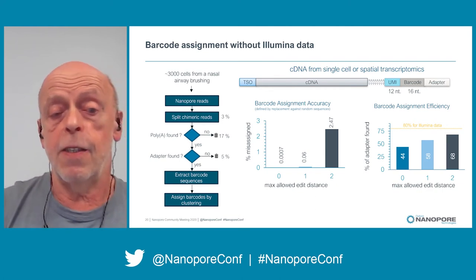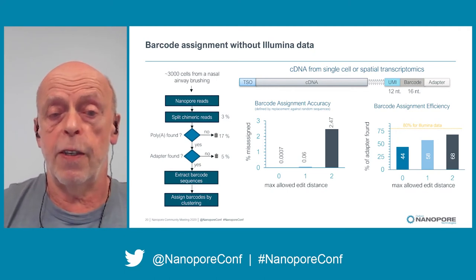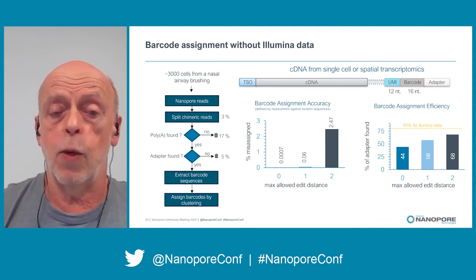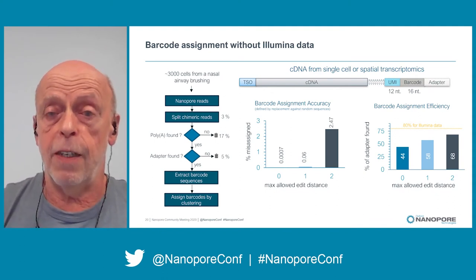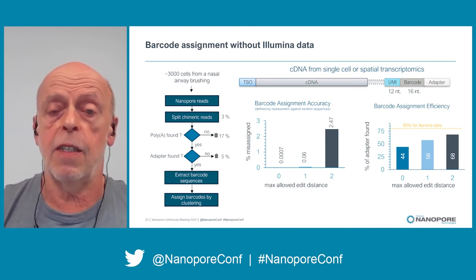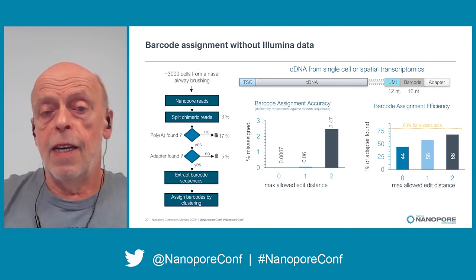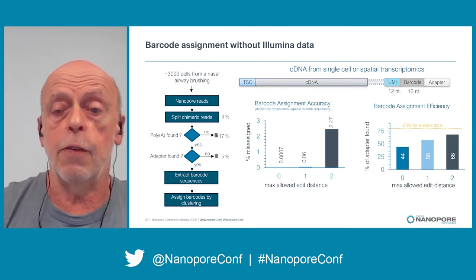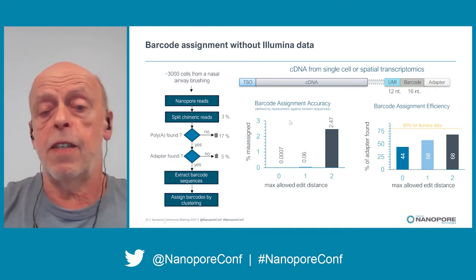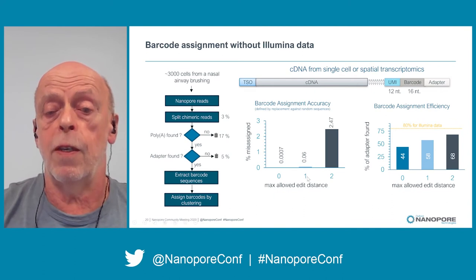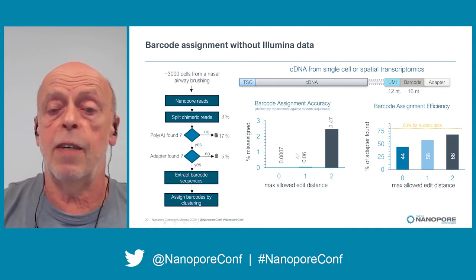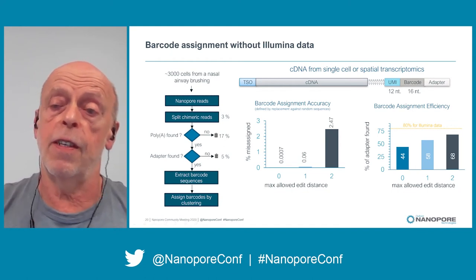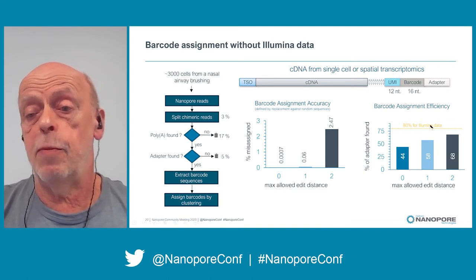Then we extract barcode sequences and assign barcodes by clustering. We do two passes: in the first pass we only use very high-quality reads to define the used barcodes; in the second pass we assign barcodes. Barcode assignment is always a trade-off between accuracy and efficiency. A good compromise appears to be allowing an edit distance of one, giving very high barcode assignment accuracy and still decent efficiency. We recover about 58% of reads — with Illumina data on the same dataset it's 80%.